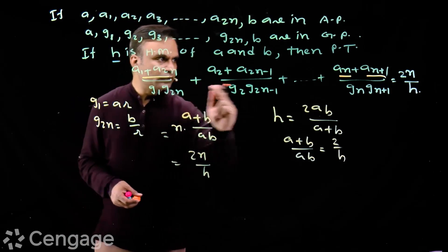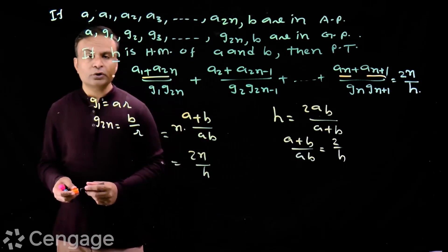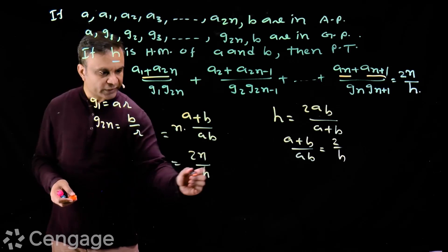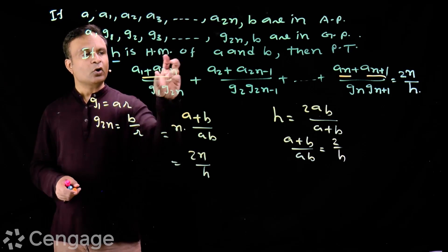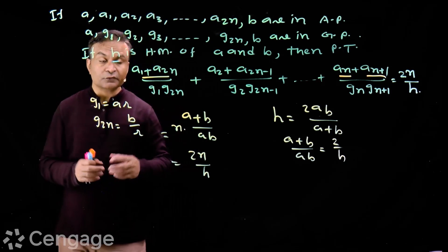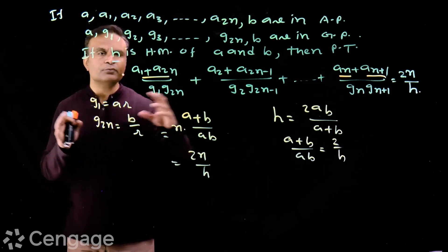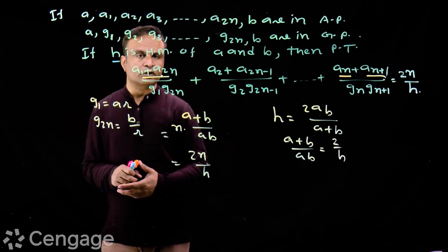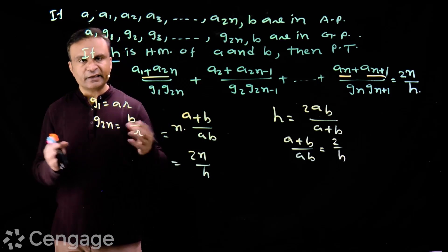So the sum of these terms on the LHS is equal to 2n upon h, where h is the harmonic mean of a and b. This is a very interesting question in which all the progressions — AP, GP, and HP — are involved.